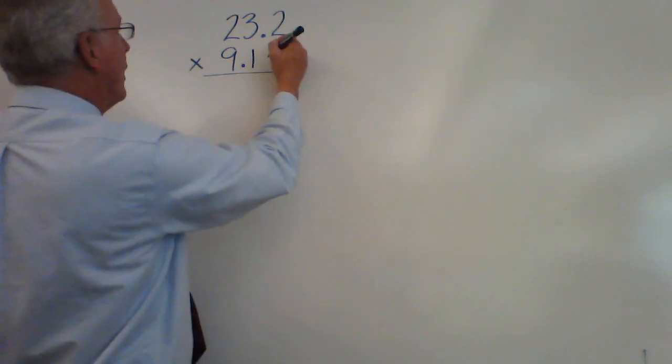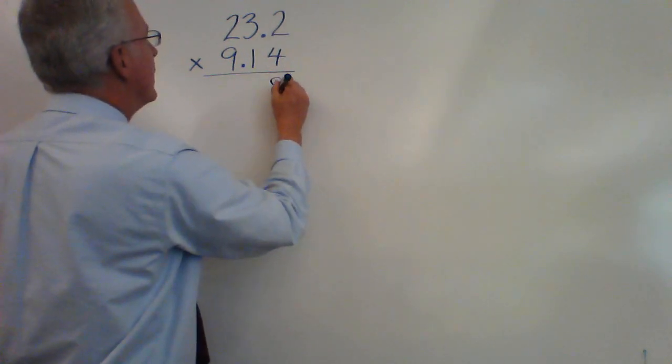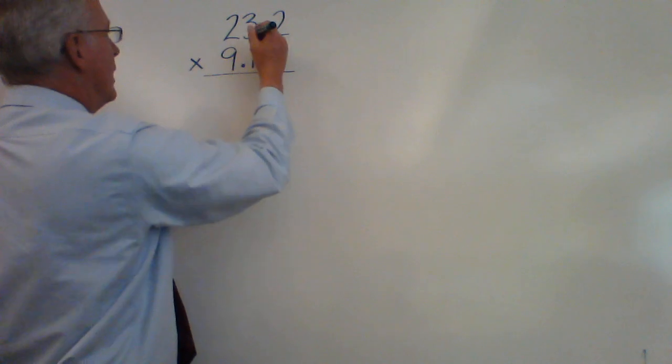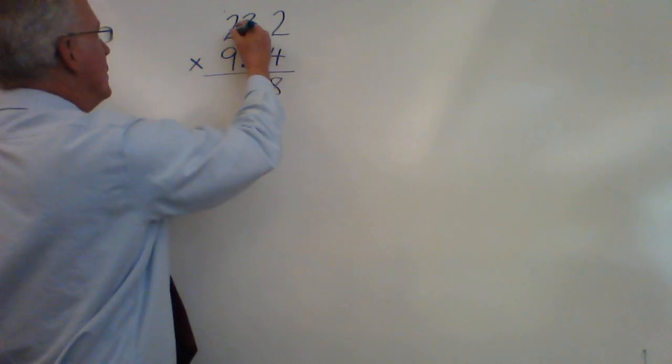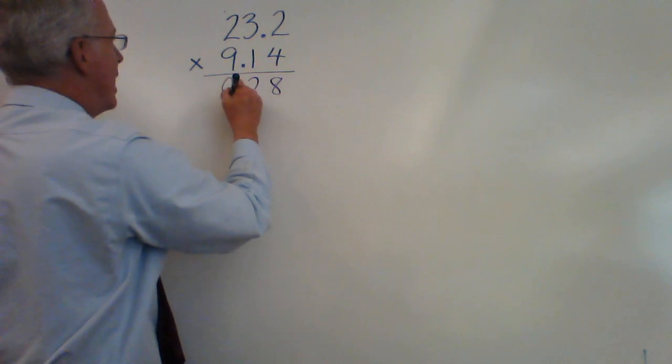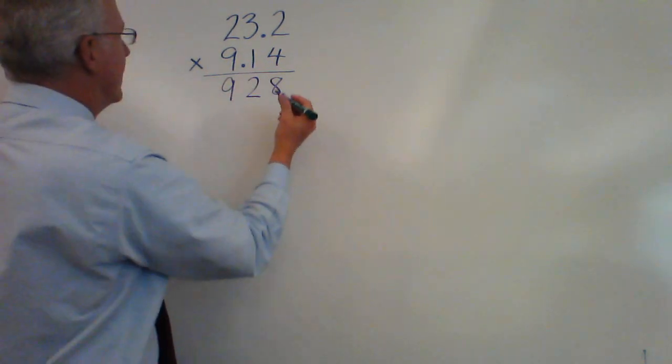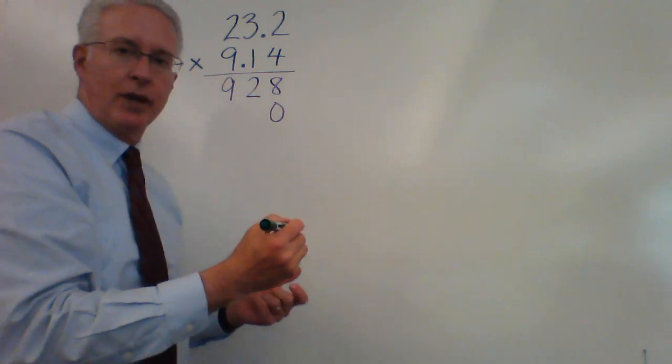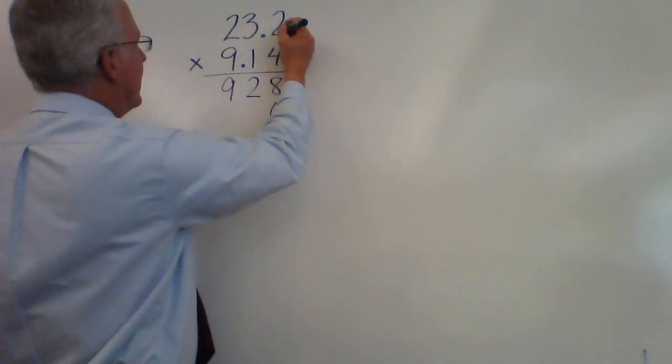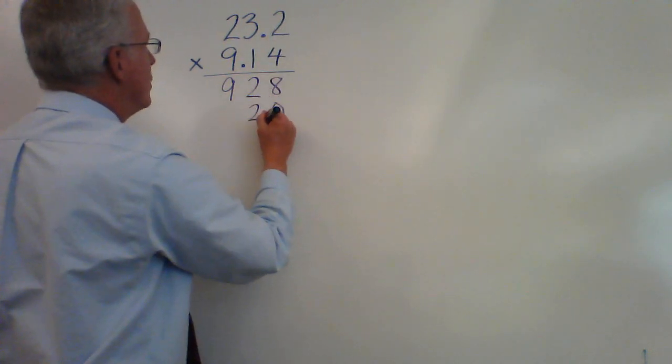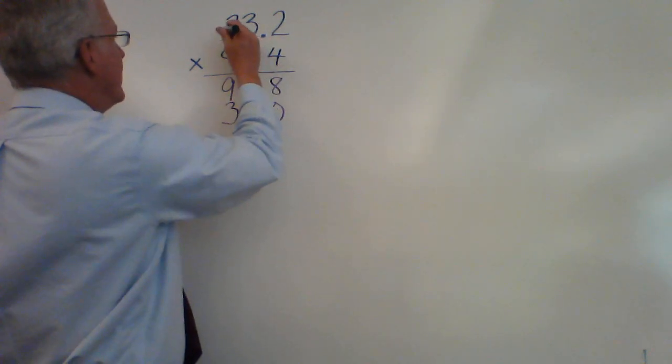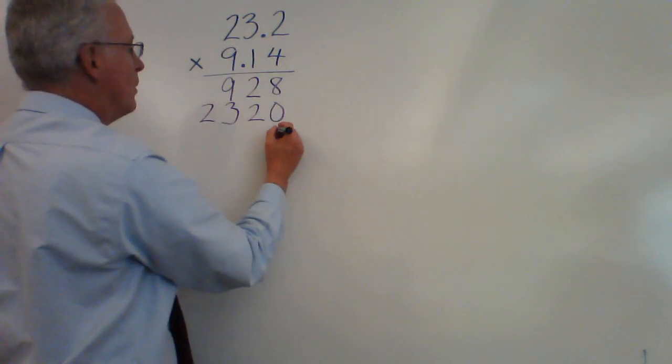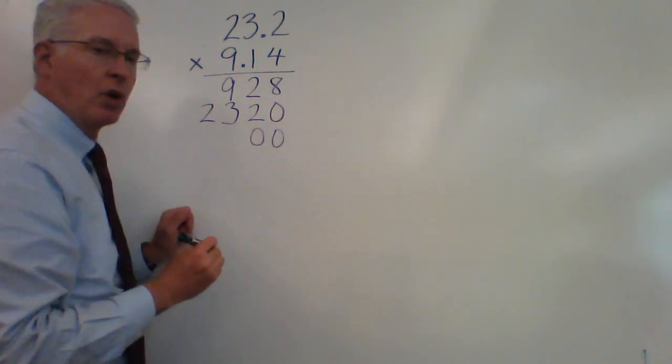Same exact thing we did before. 4 times 2 is 8. 4 times 3 is 12. 4 times 2 is 8, 9. Put a 0. That's the part we're always going to forget. 1 times 2 is 2. 1 times 2 is 2.